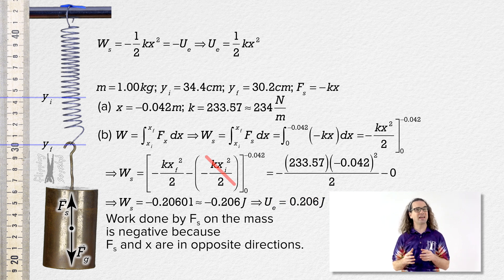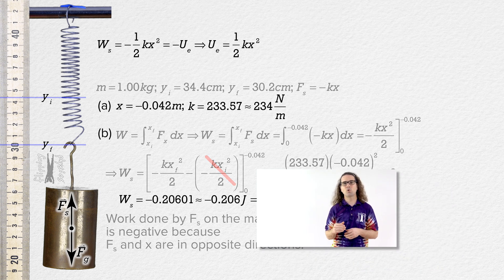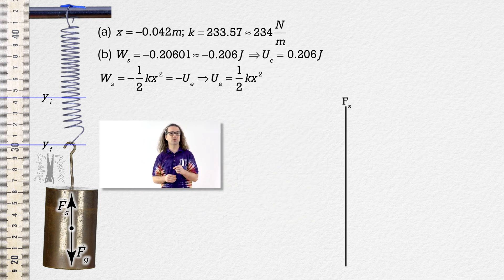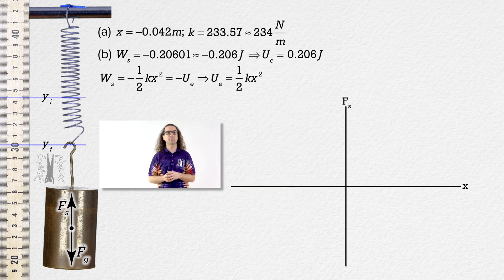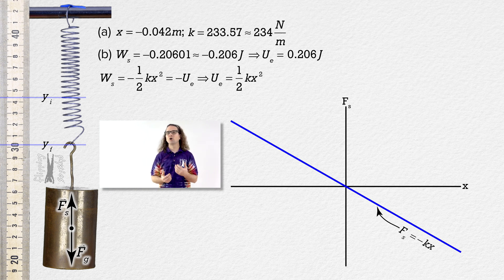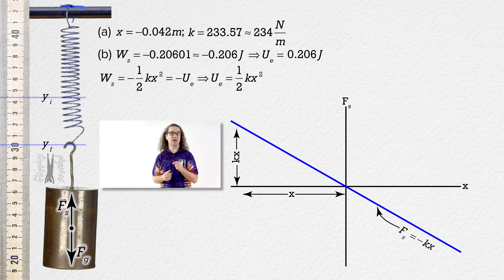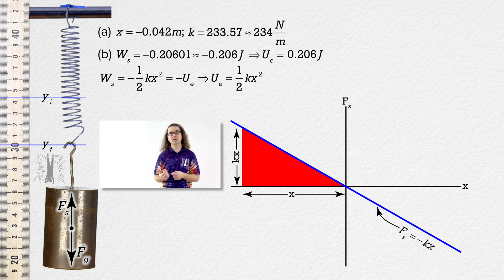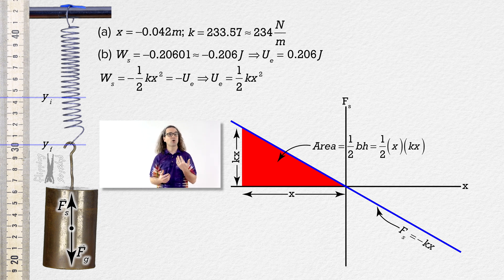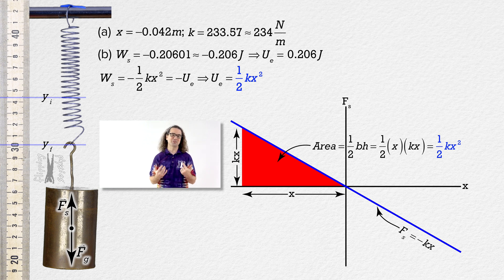If we look at this in terms of area under a function, we can plot Hooke's law on axes of spring force on the vertical axis and displacement from equilibrium position on the horizontal axis. Hooke's law is represented by the blue line on the graph. When the spring is displaced a distance x from equilibrium, the spring force has a magnitude of k times x. The area of the red triangle is the area under the function: one-half base times height equals one-half times x times kx, or one-half kx squared — elastic potential energy, as we showed using the integral.